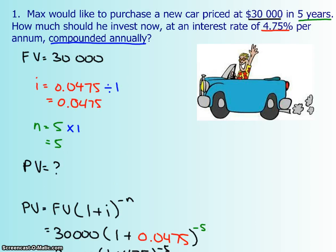So this is the type of question that you could see. Max would like to purchase a new car priced at $30,000 in five years. How much should he invest now at an interest rate of 4.75% per annum, compounded annually? So his future amount, he wants to buy this car worth $30,000.